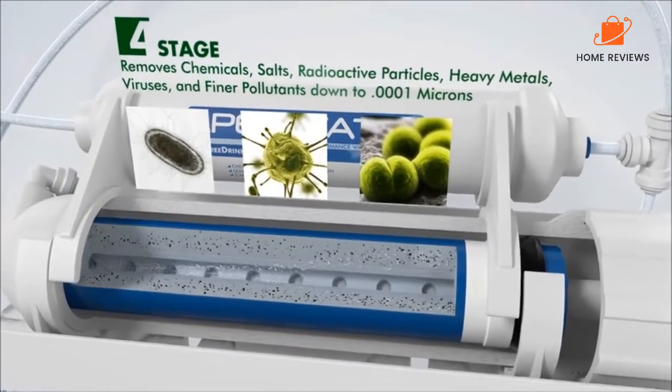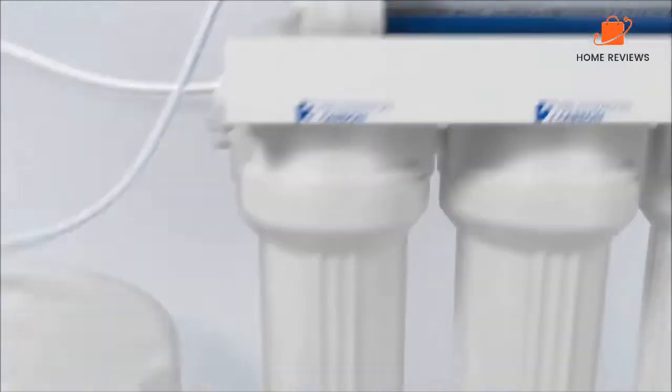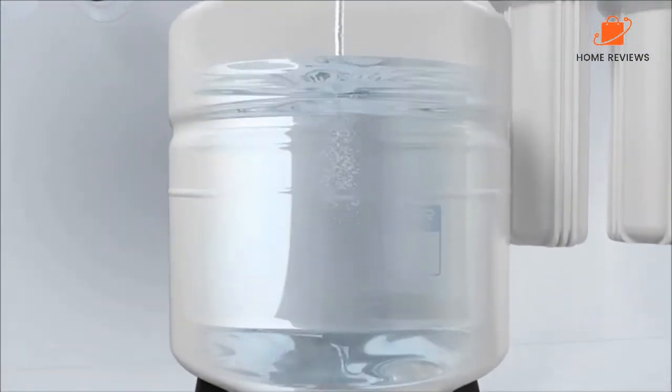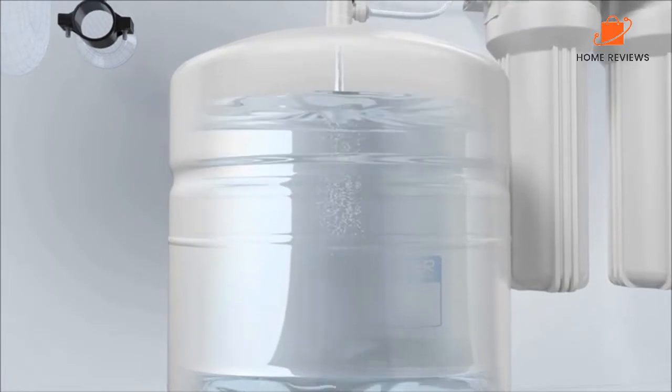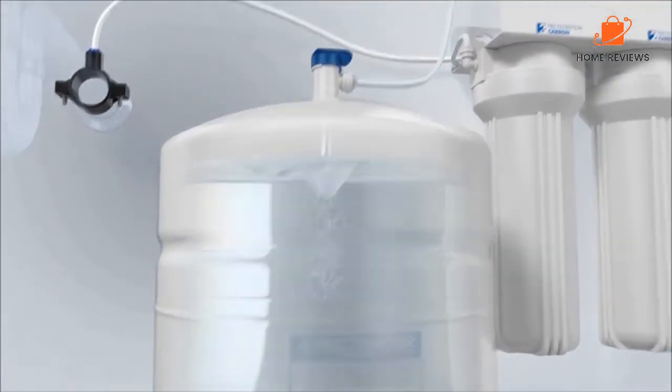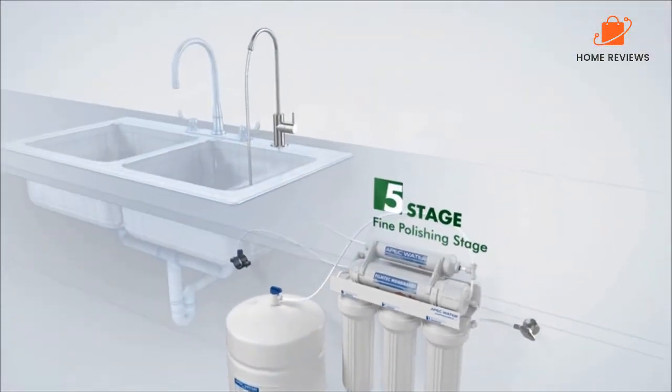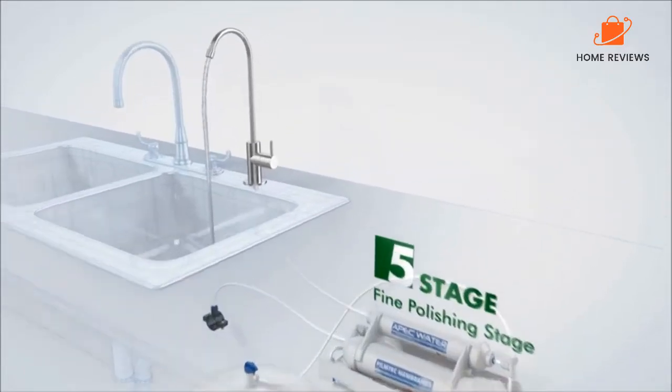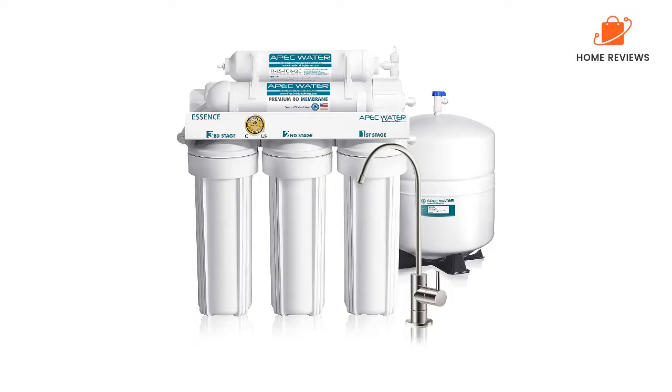The APIC ROES50 includes a four-gallon storage tank, faucet dispenser, along with a filter set, necessary tubing, and an installation kit. Filter life is 6 to 12 months for stage 1 to 3 filters, and 2 to 4 years for the reverse osmosis membrane and carbon filter.